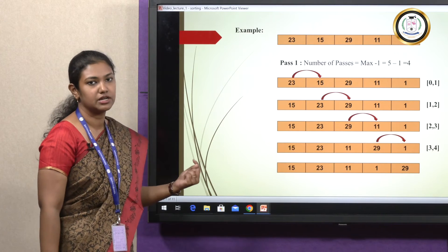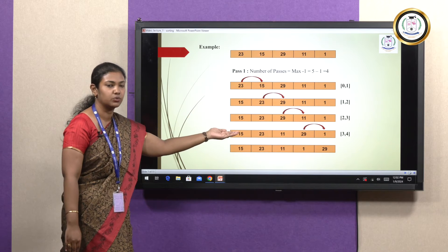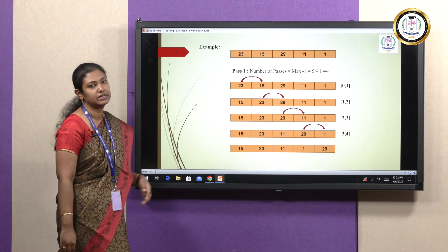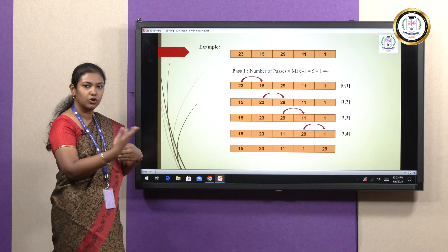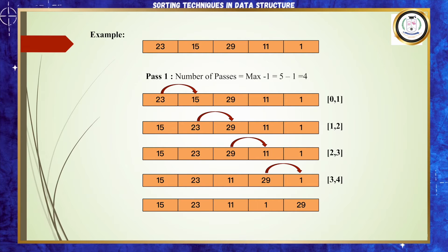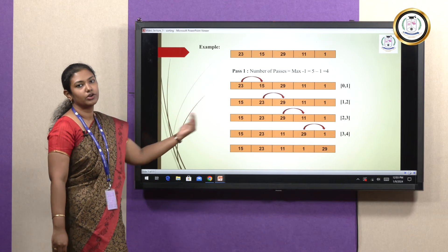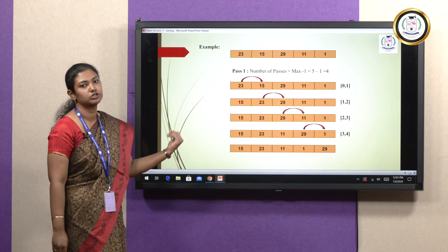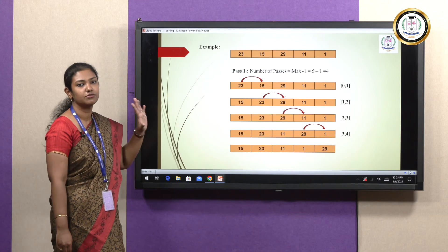Now the second and third elements are compared at index 1 and index 2: 23 and 29. Since 23 is already smaller than 29, they are already sorted so we ignore and move on. Comparing the third and fourth elements, 11 is smaller than 29, so we swap 11 and 29. Finally comparing the last two positions, 29 and 1: since 1 is smaller we swap them. After pass 1 we have 15, 23, 11, 1 and 29.